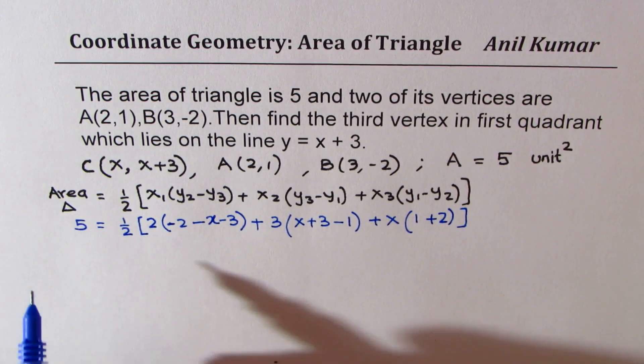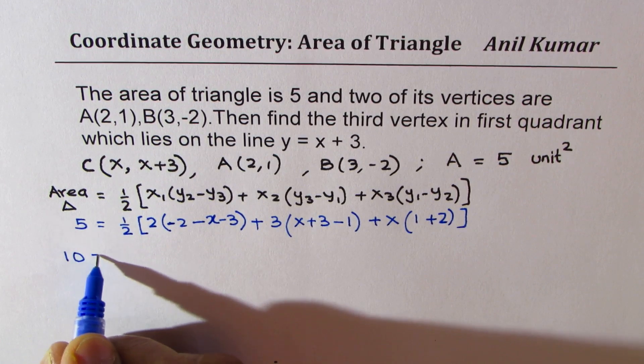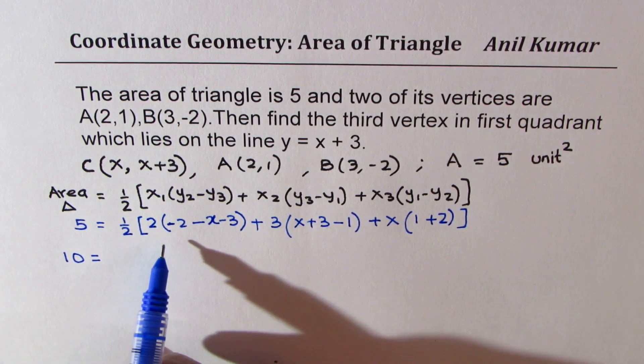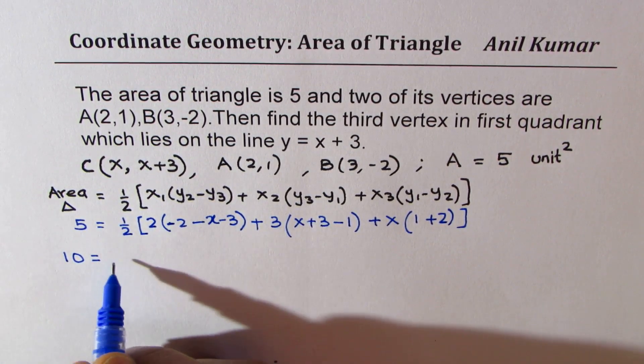We can cross multiply, write this as 10 equals 2. And now this bracket can be opened. So let's simplify it first, 2 times -2 - 5.